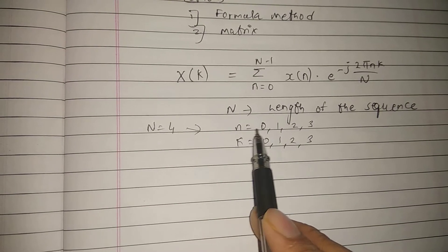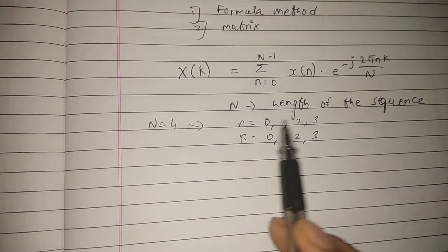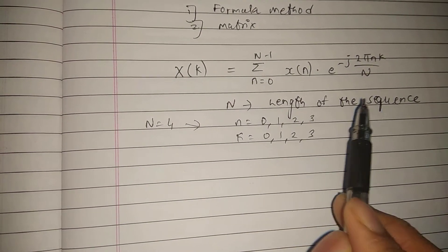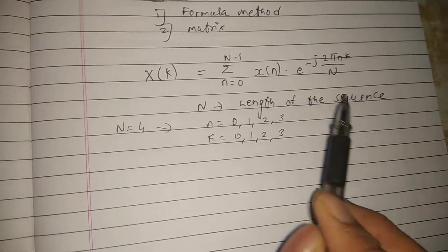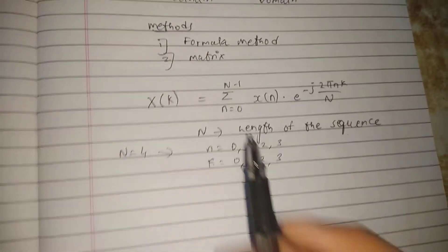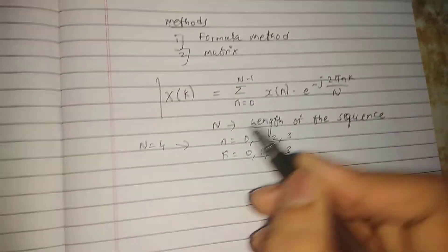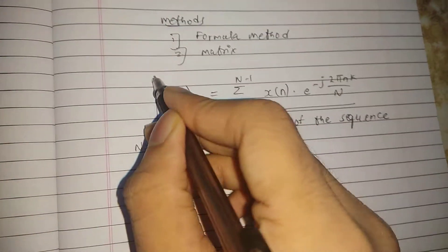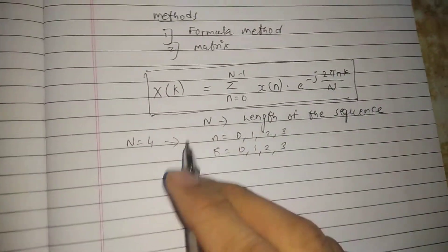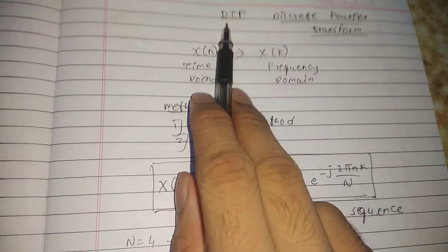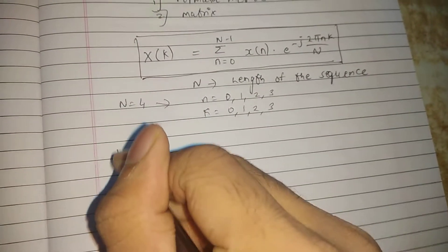If your N is 6, then your values of n will be 0, 1, 2, 3, 4, 5 - not 6, only up till 5. So this is the formula method. You have to remember this particular formula in order to calculate the Discrete Fourier Transform. Now next is matrix method.